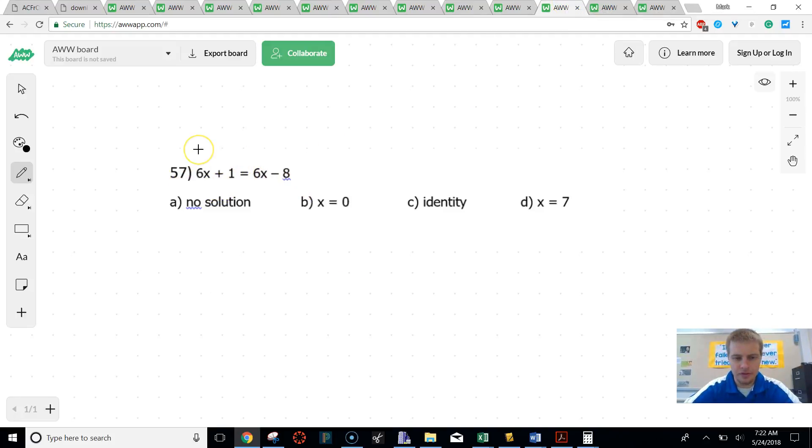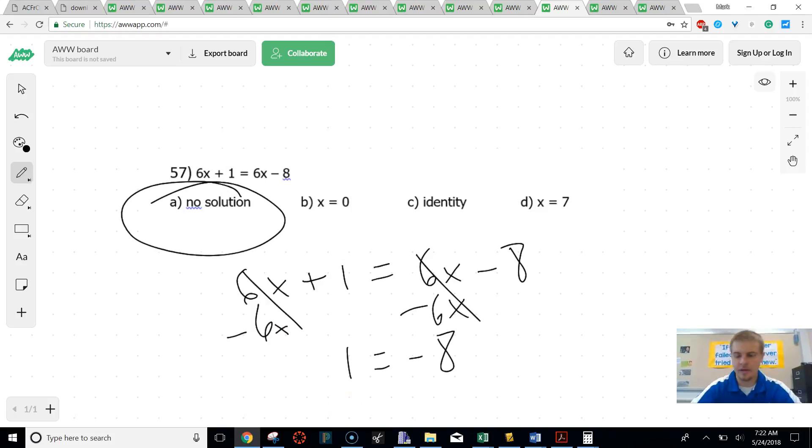Let's try the next one. Let's solve this. So the first thing that I would do is I would subtract 6x from both sides. That's going to cancel out on both sides. I'm going to get 1 equals negative 8. And if I get 1 equals negative 8, I know that's not true, so it's no solution.